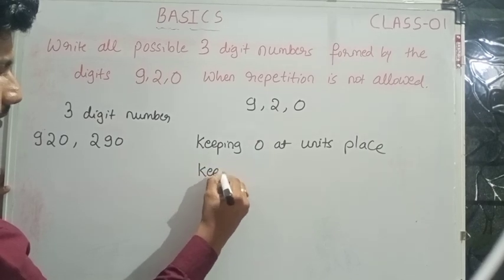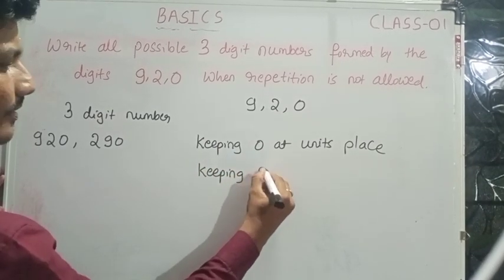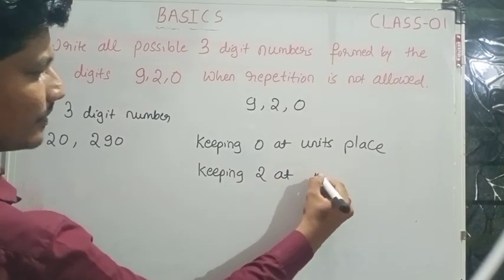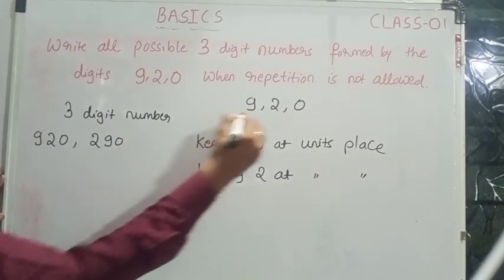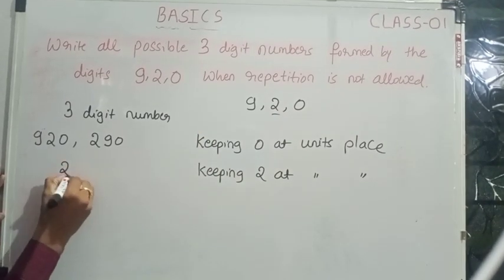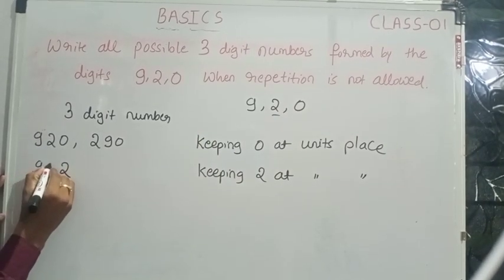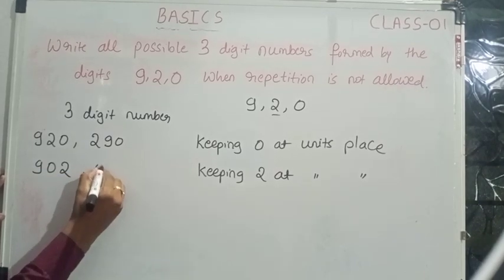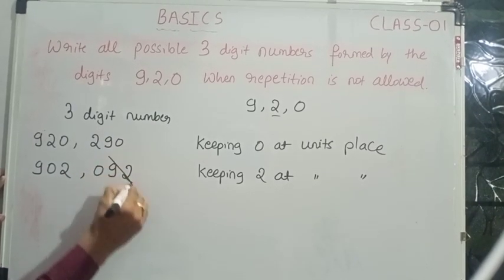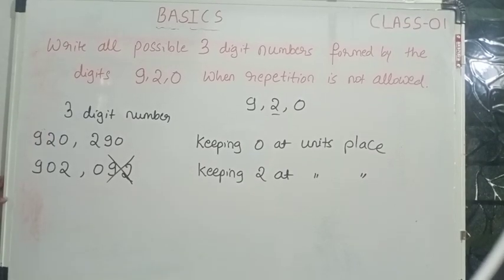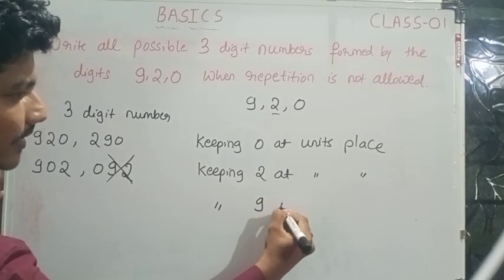Keeping 2 at the unit's place, we get 902. Note that 092 is not a valid 3-digit number. Therefore, the only 3-digit number here is 902.